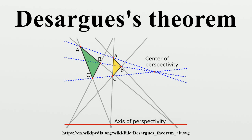By definition, two triangles are perspective if and only if they are in perspective centrally. Note that perspective triangles need not be similar. Under the standard duality of plane projective geometry, the statement of Desargues's theorem is self-dual: axial perspectivity is translated into central perspectivity and vice versa. The Desargues configuration is a self-dual configuration.